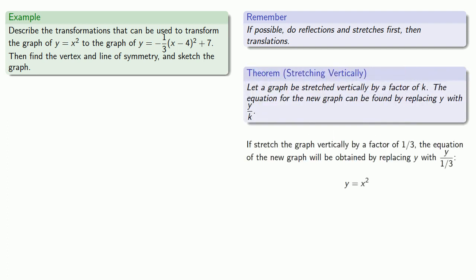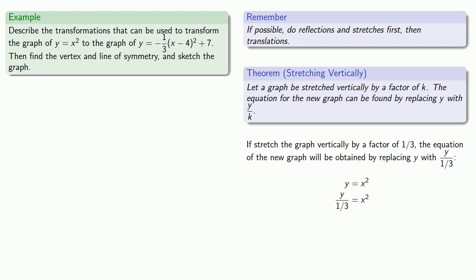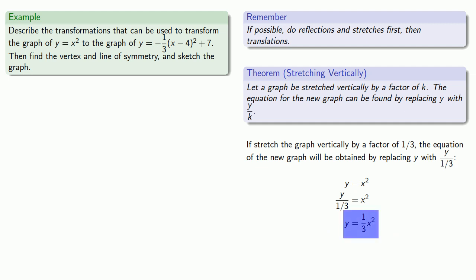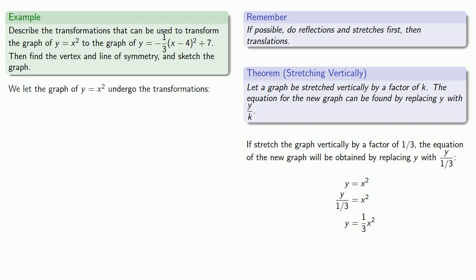Let's stretch the graph vertically by a factor of one-third. If we do that, the equation of the new graph will be obtained by replacing y with y over one-third. If we solve this equation for y, our equation is starting to look like the equation we want. So we let the graph of y equals x squared undergo the transformation of being stretched by a factor of one-third, becoming the graph of y equals one-third x squared.